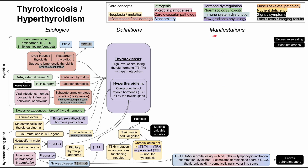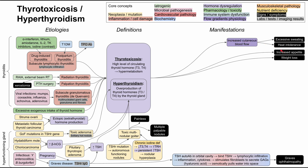Now covering the manifestations of general hyperthyroidism and thyrotoxicosis. Two classic symptoms are excessive sweating and heat intolerance, both caused by increased cutaneous blood flow from thyroid hormone. Thyroid hormone also causes increased appetite and weight loss — seemingly paradoxical, but in this hypermetabolic state the patient can eat more and still lose weight.